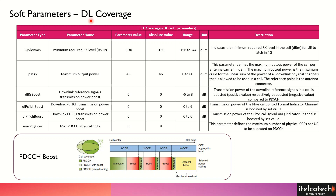Apart from the hard parameters — which are the azimuth, the tilt, and the antenna height — there are certain soft parameters which we can tweak to improve or optimize the coverage.